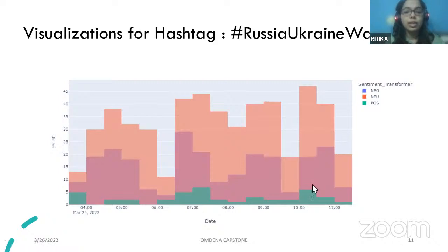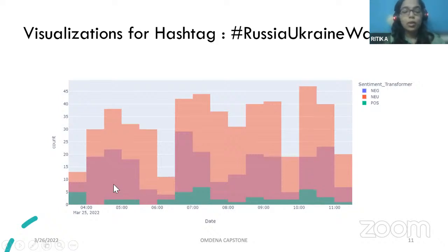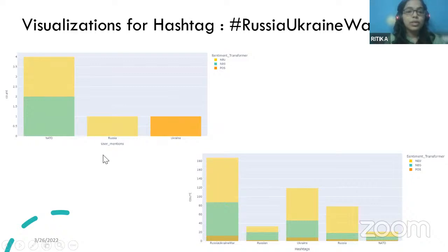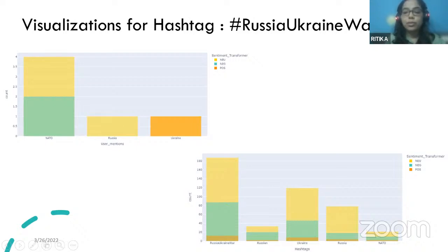I also plotted a time series timeline of the tweets — during which time, what kind of sentiment the tweet had. It was extracted on the 25th of March, and since we can only extract tweets from the past week, you can see how positive tweets are distributed at very low counts, followed by negative, and then neutral. We can also extract the most mentioned hashtags for a particular search — these are the top five hashtags used along with the Russia-Ukraine War hashtag.